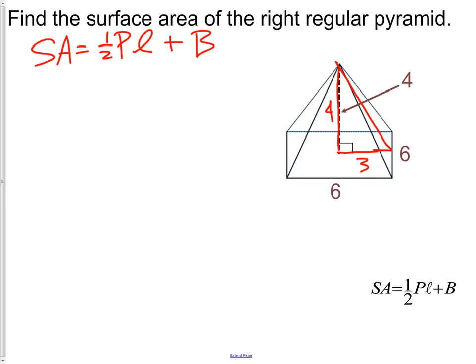So to find the missing piece, which would be the slant height, I'm just going to do 3 squared plus 4 squared equals my slant height. Or 9 plus 16 equals the slant height. And from there, we can get the slant height is 5.